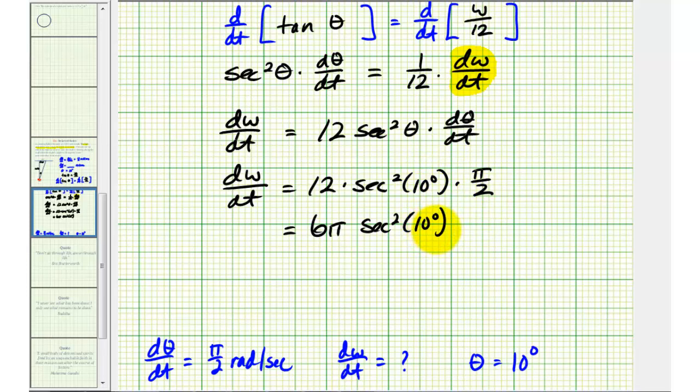This is not a nice reference angle, so we'll have to use a calculator in order to approximate this value. But there's no secant key on the calculator, so we need to remember that secant theta is equal to the reciprocal of cosine theta, so we can also write this as 6 pi times 1 divided by cosine 10 degrees squared. And now we'll go to the calculator to get our decimal approximation for this value.